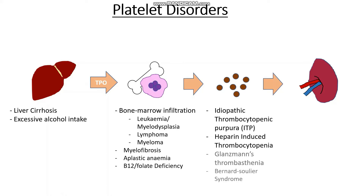And this is what we call Bernard-Soulier syndrome. Now, these two conditions are rather fine print, so don't worry hugely about these ones. The last thing that could happen is that we may have an overactive spleen, a very hungry spleen, which eats a lot of our platelets in something like hypersplenism.